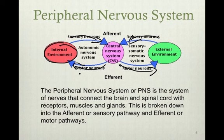The peripheral nervous system is a system of nerves that connects the brain and spinal cord with the receptors, muscles, and glands. It is broken down into an afferent, or sensory pathway, and an efferent, or motor pathway. Efferent means exit; afferent means input.